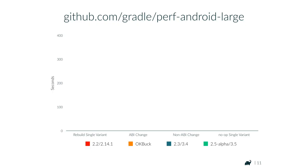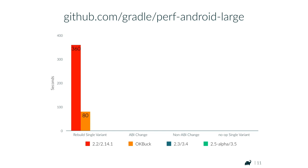There are four use cases. For a full rebuild of a single variant: with Android Plugin 2.2 and Gradle 2.14.1, this takes 6 minutes. With Buck, it takes 18 seconds — about 4 to 5 times faster. With Android Plugin 2.3 and Gradle 3.4, we got this down to 90 seconds. And with 2.5 alpha and Gradle 3.5, it's now down to 80 seconds.